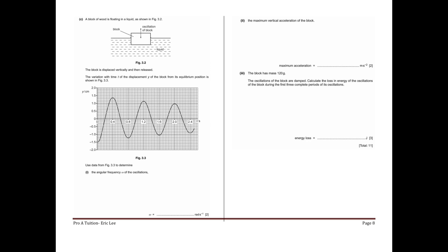Part C: a block of wood is floating in a liquid as shown in figure 3.2. The block is displaced vertically and released. The variation with time t of the displacement y of the block from its equilibrium position is shown in figure 3.3. You can see it oscillates with the amplitude decreasing slowly — this is called light damping.